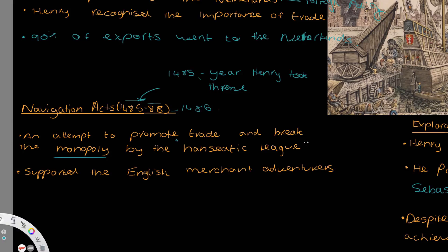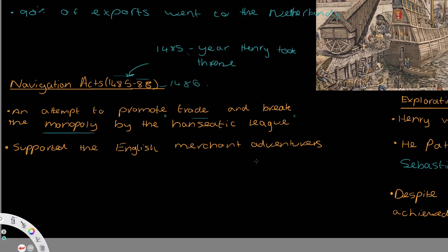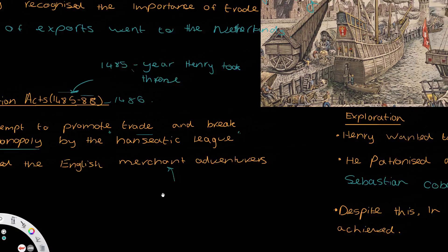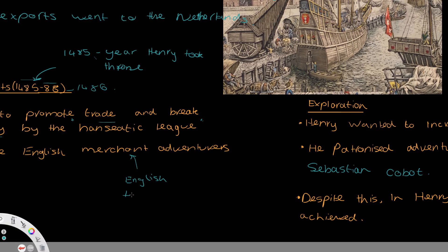The Hanseatic League were a European trading company that had formed a monopoly — that is, the vast majority of trade and income from the trading industry went to one place: the Hanseatic League. They had all the power in the trading industry at this time. The Navigation Acts were introduced to support English traders, specifically the Merchant Adventurers, which were an English trading company. The Merchant Adventurers were promoted by the Navigation Acts, which is important.